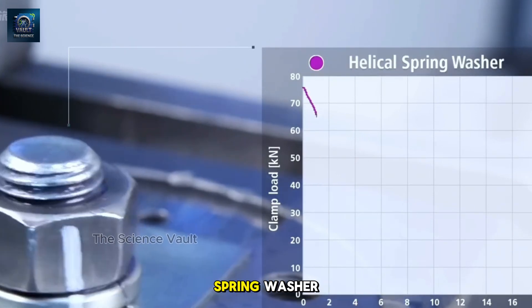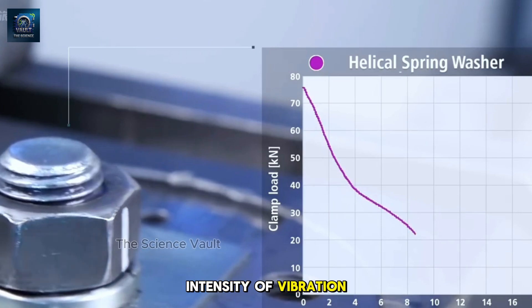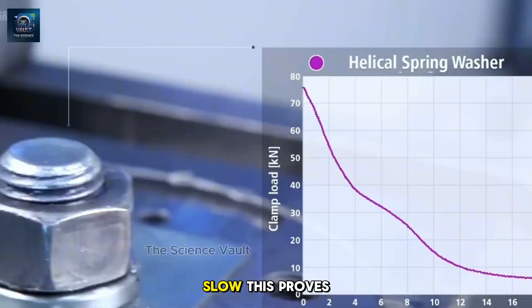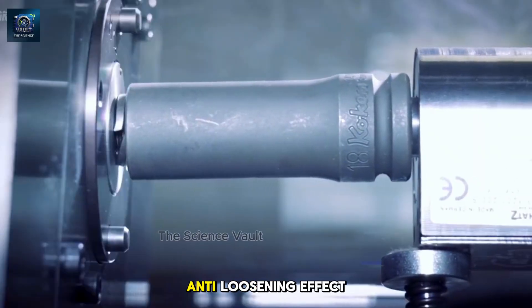Next is the nut with a spring washer. Under the same intensity of vibration, although the tightness has decreased, it's relatively slow. This proves the spring washer has a certain anti-loosening effect.